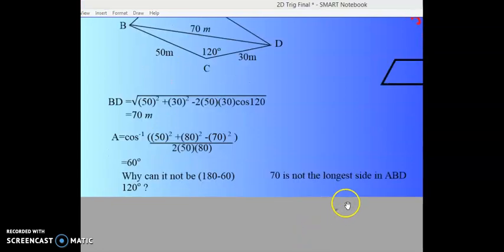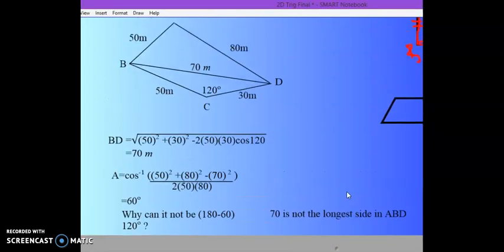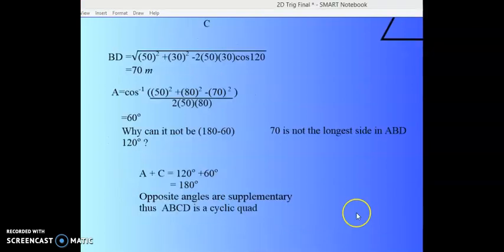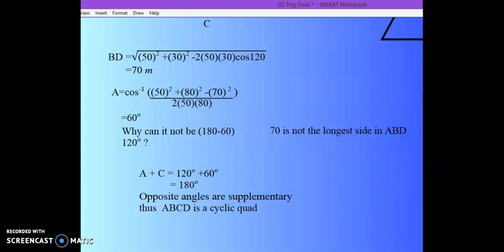So in short or in abbreviated terms, we can say 70 is not the longest side in triangle ABD. The last question asked us to calculate and stipulate that this quadrilateral is a cyclic quad.